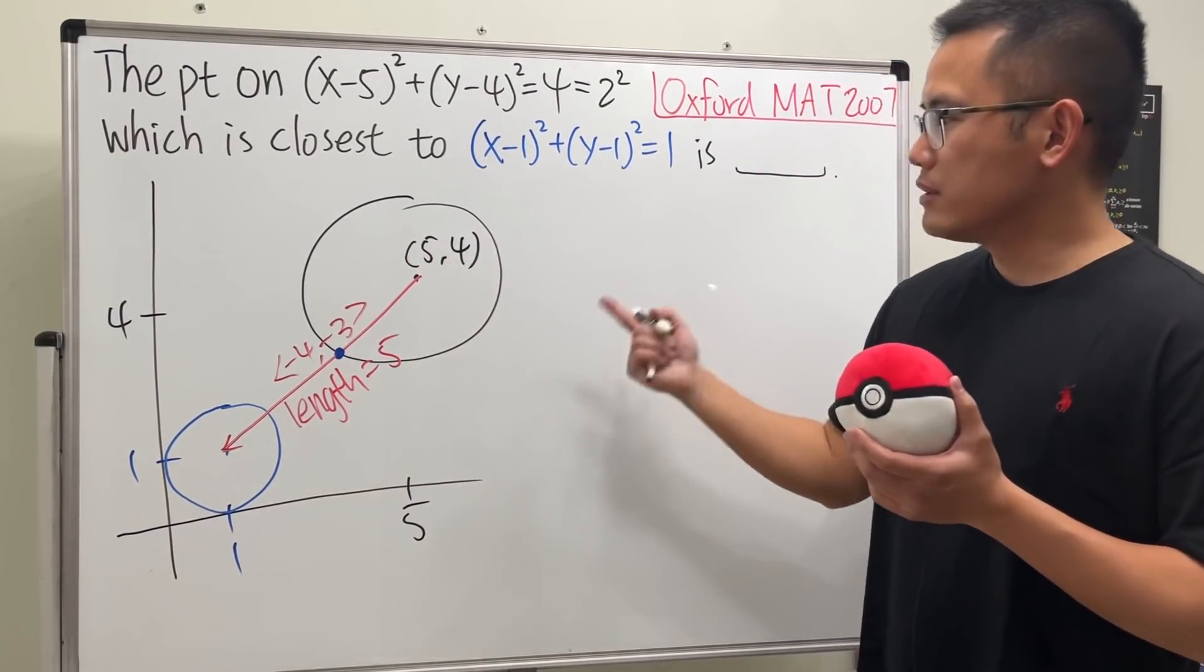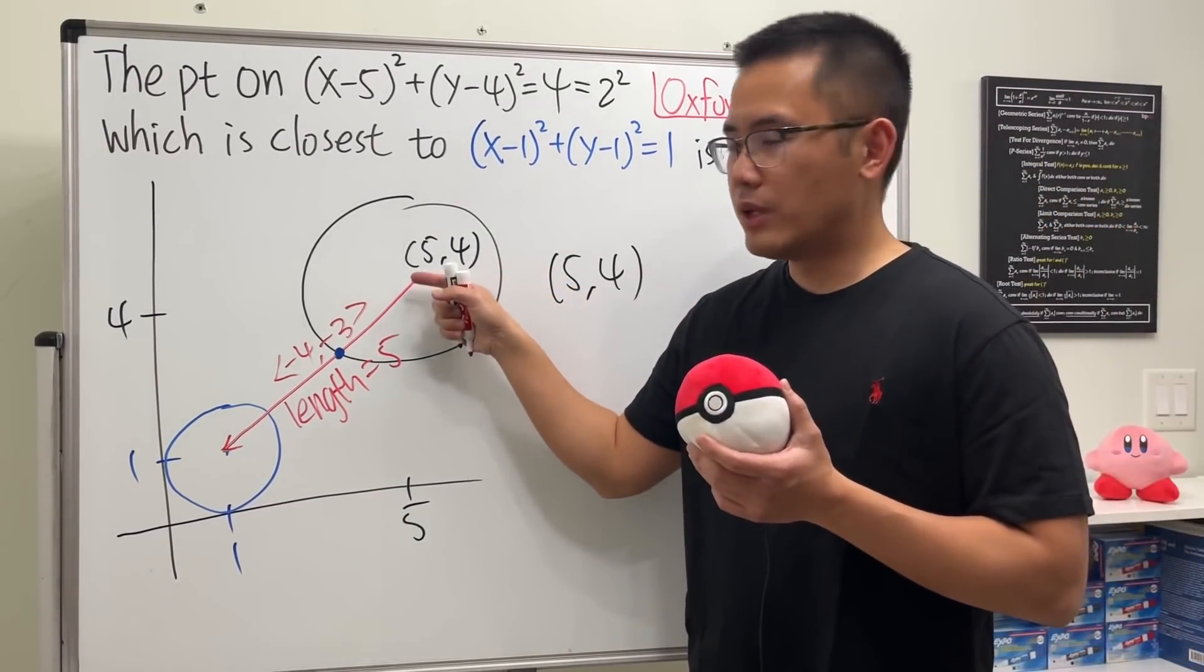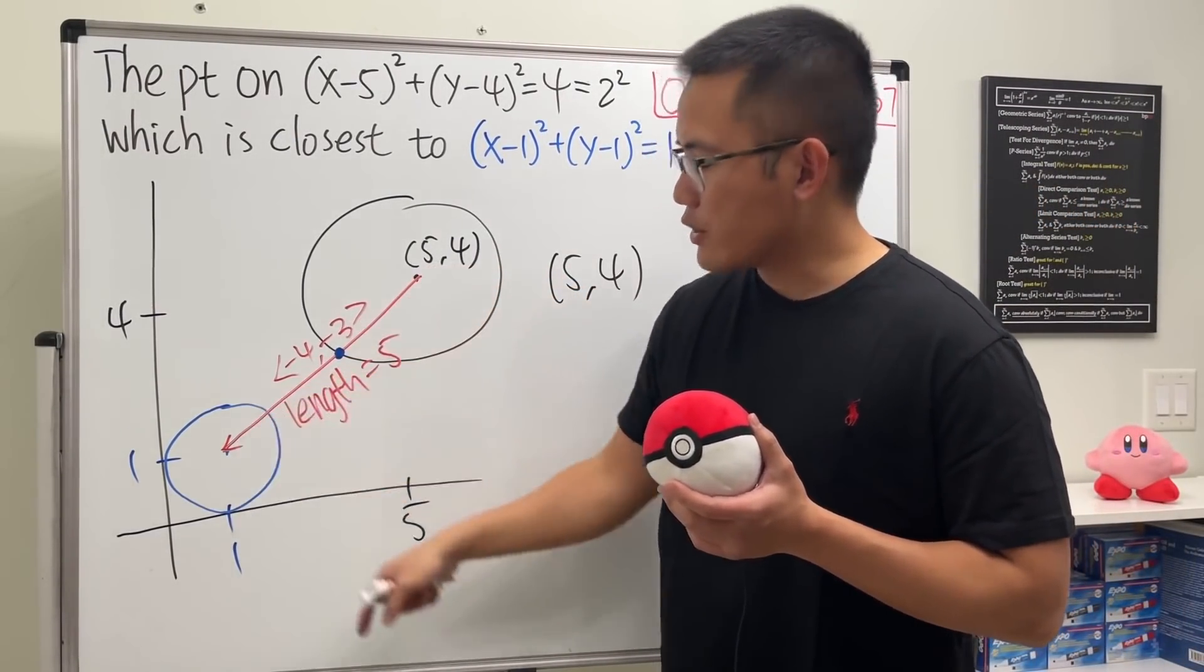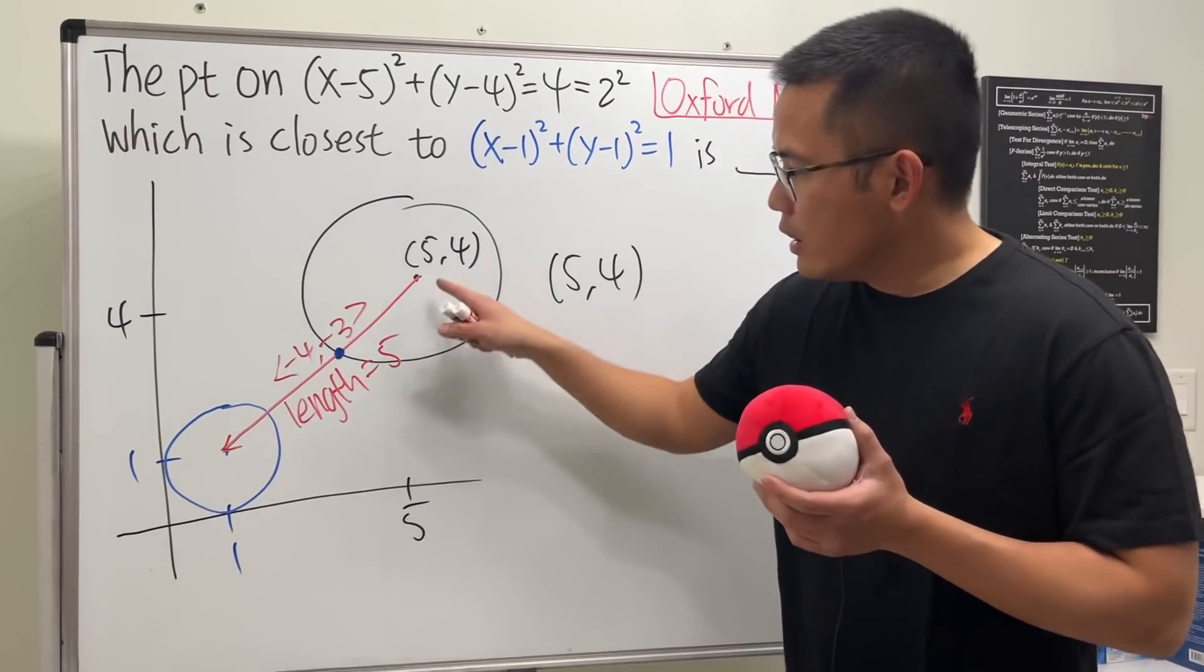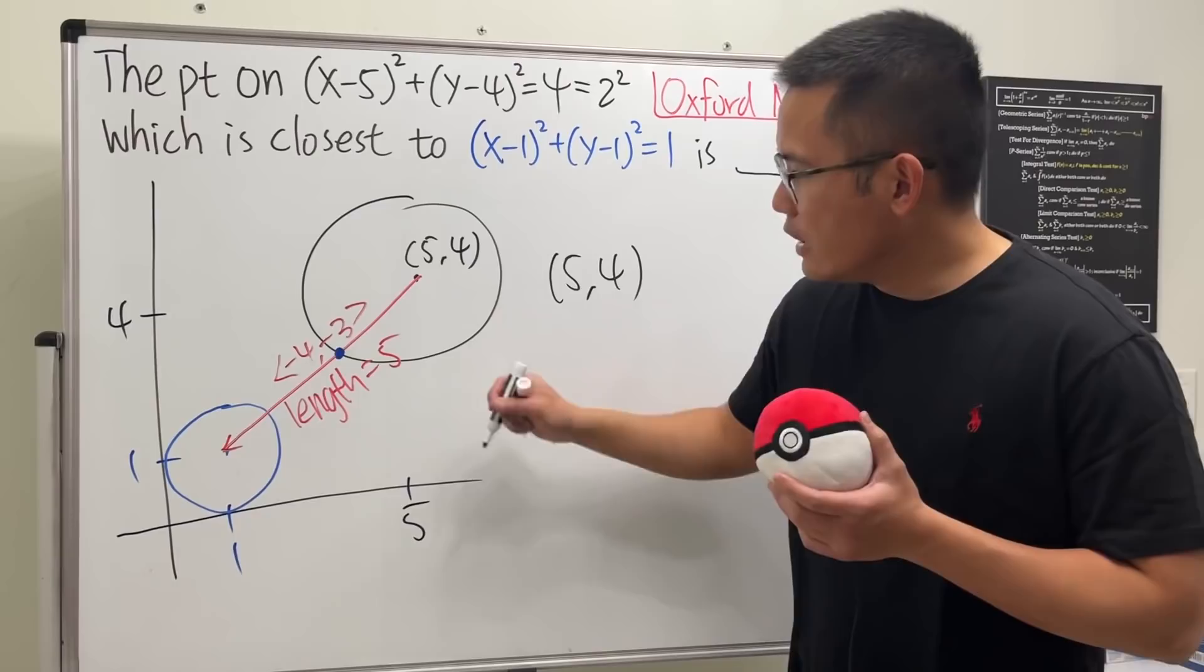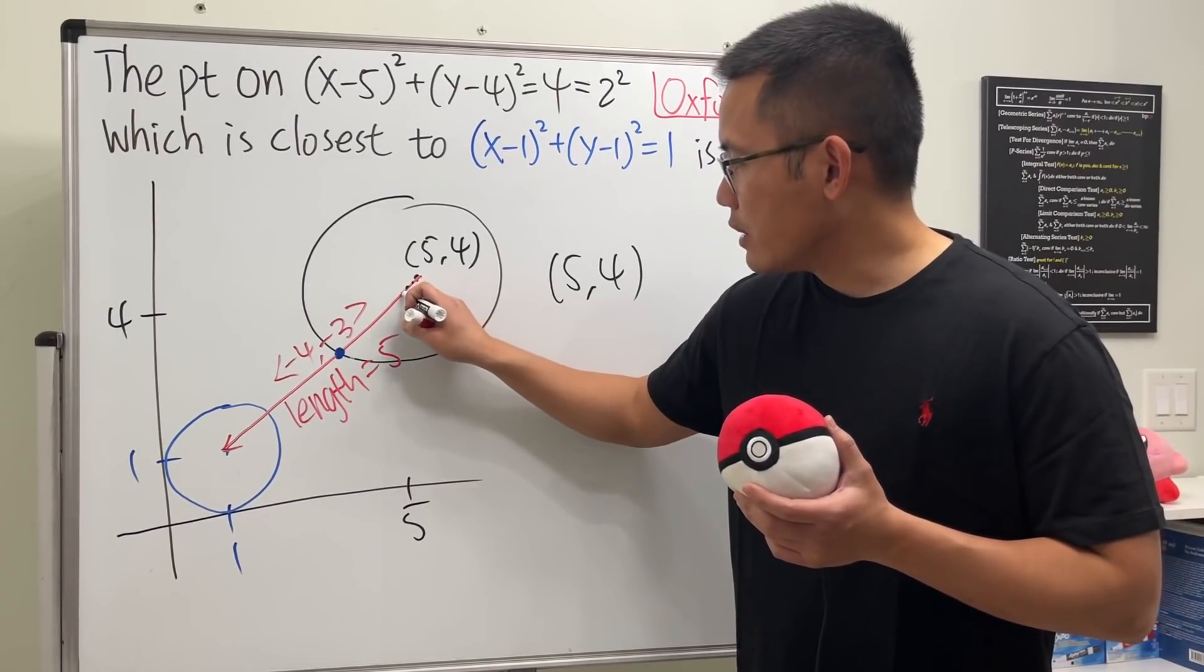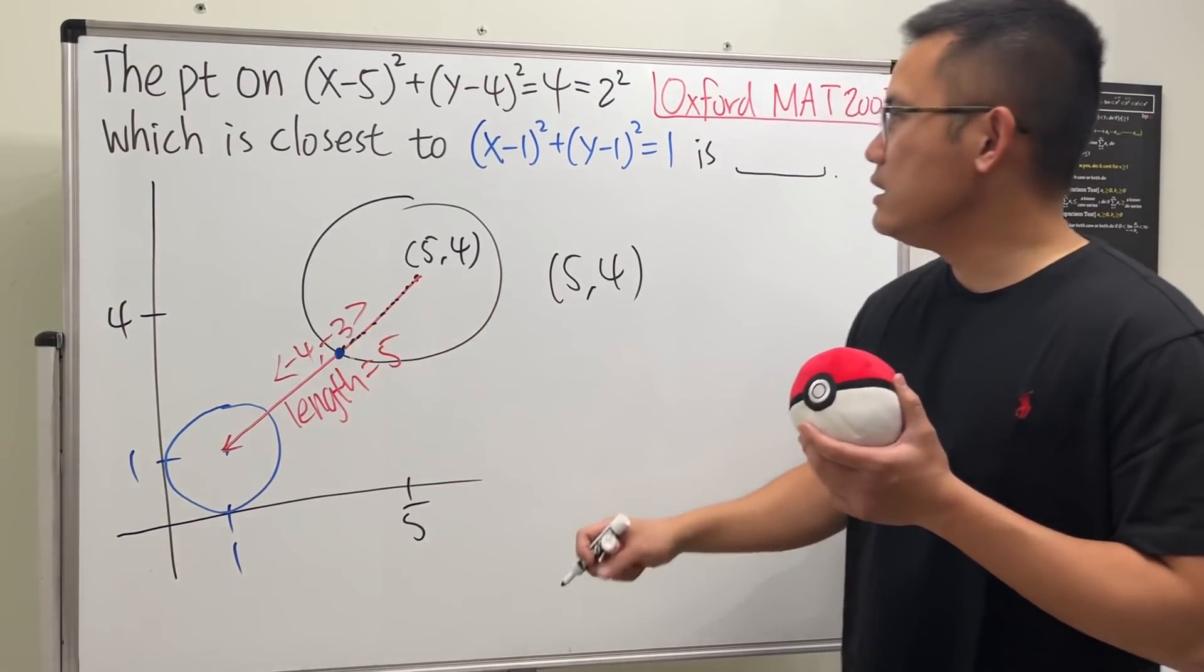So we just have to start at (5,4) and we have to travel from here in that direction. But for how long? If you travel all the way, of course you get to the center, but you don't want to do that.